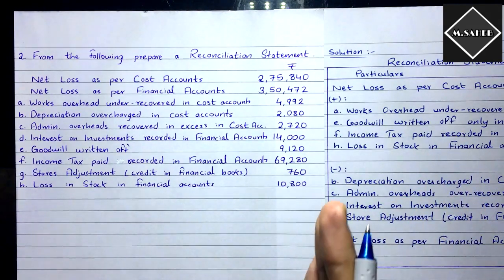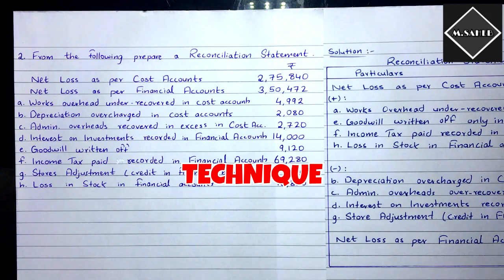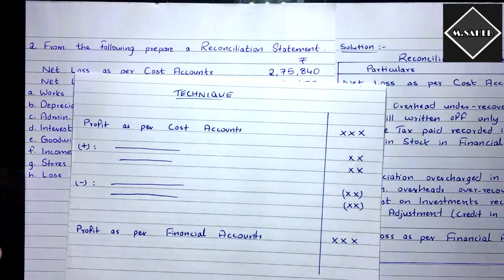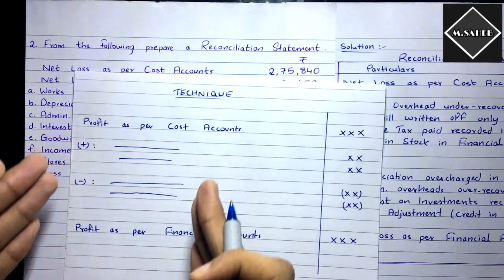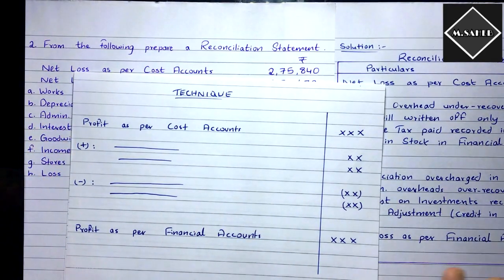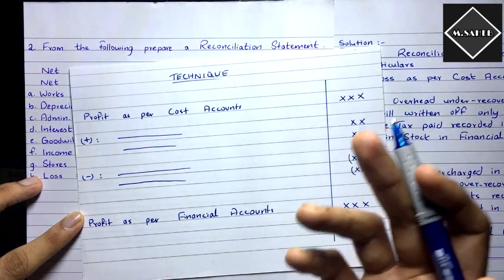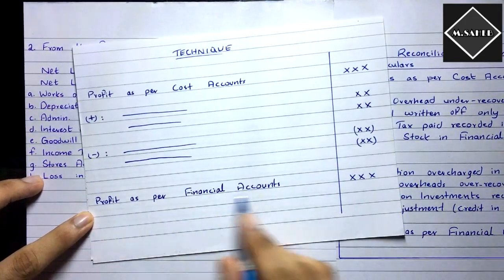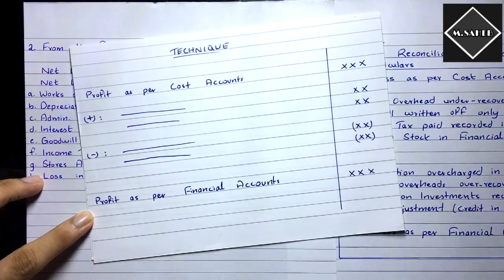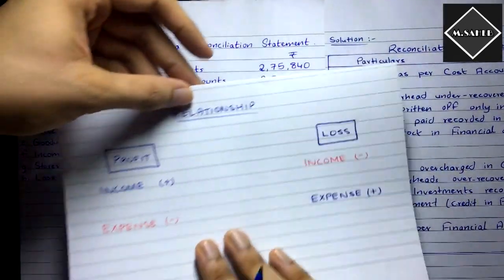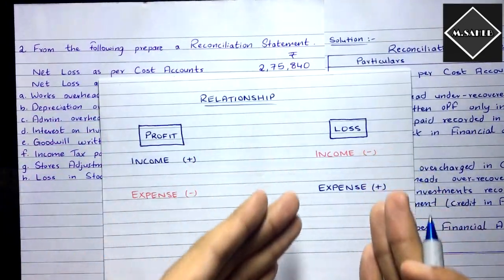Now this question has losses given. Before we solve it, let me show you the format and technique once more. The format has a particulars column. You start with one profit and try to reach another profit by adding or subtracting transactions. I recommend starting with the costing profit or loss, whatever is given in the question, but it's your choice. The profit you arrive at is called the target profit.